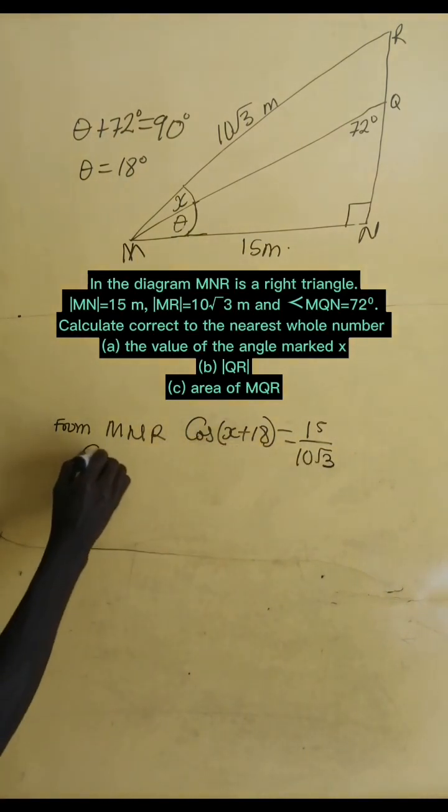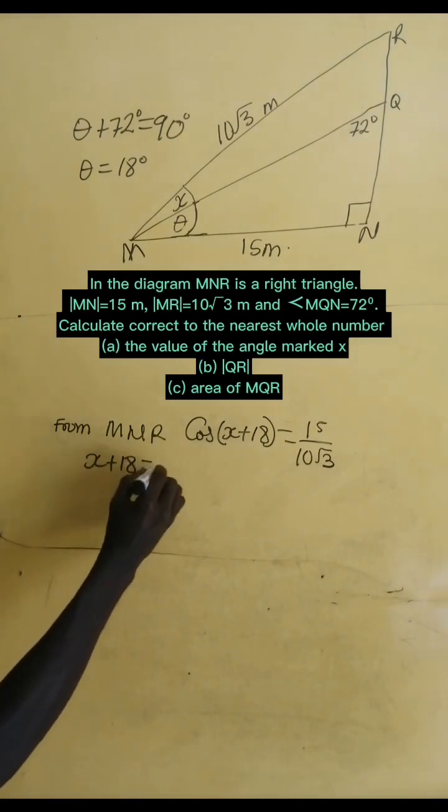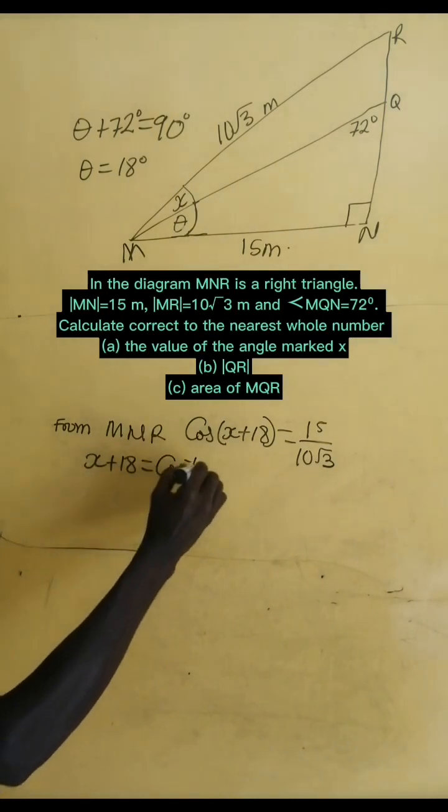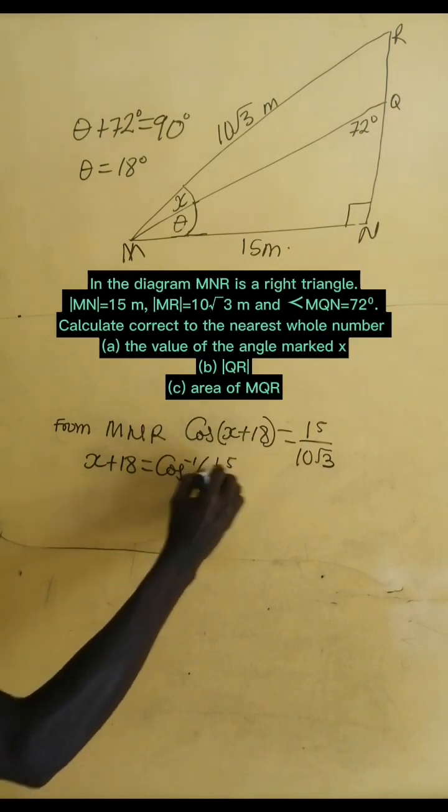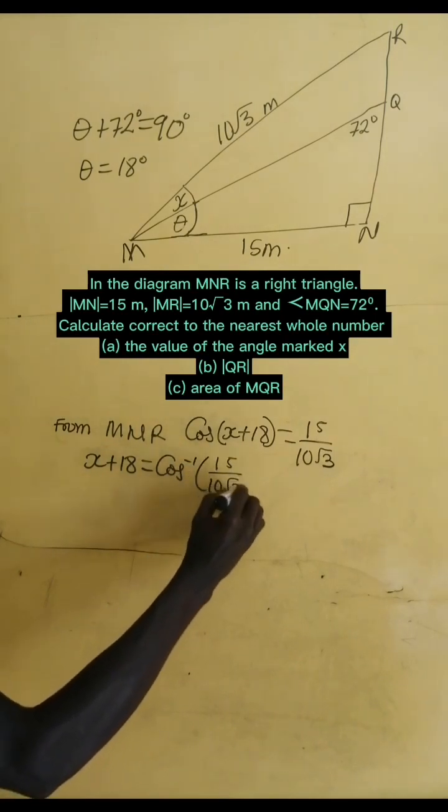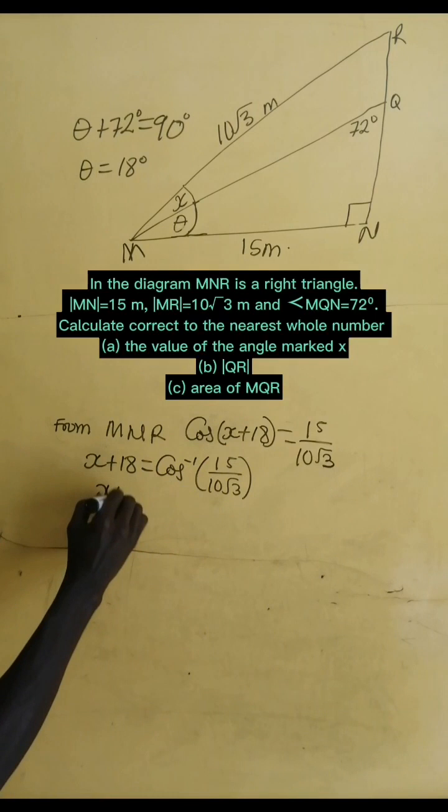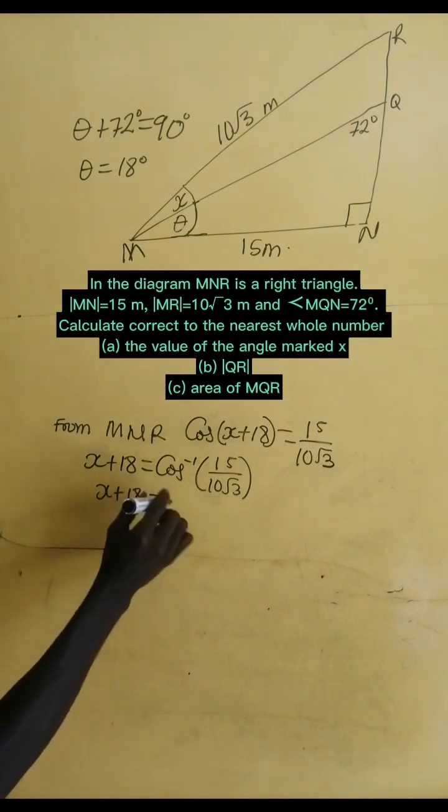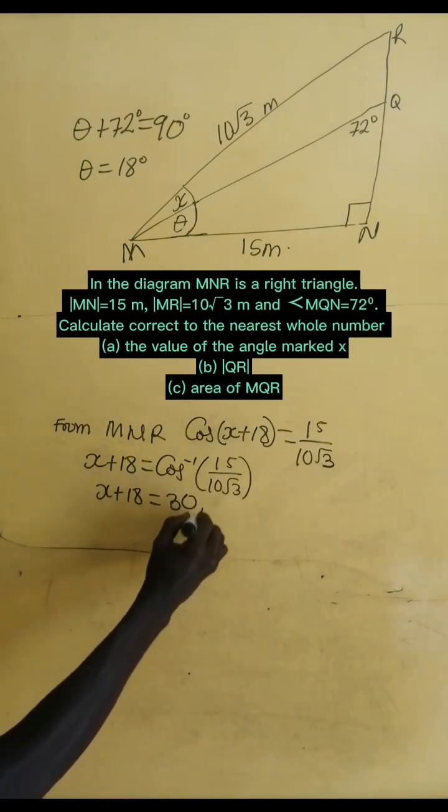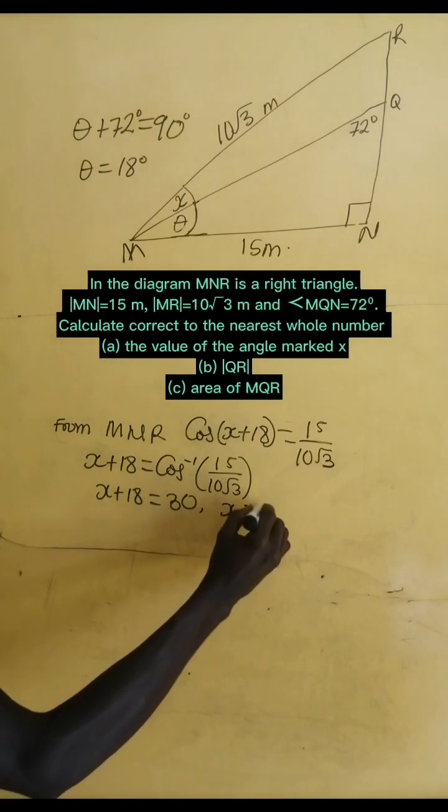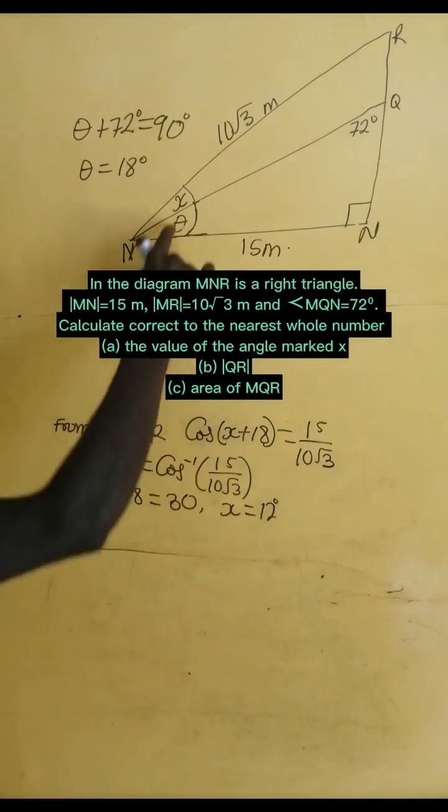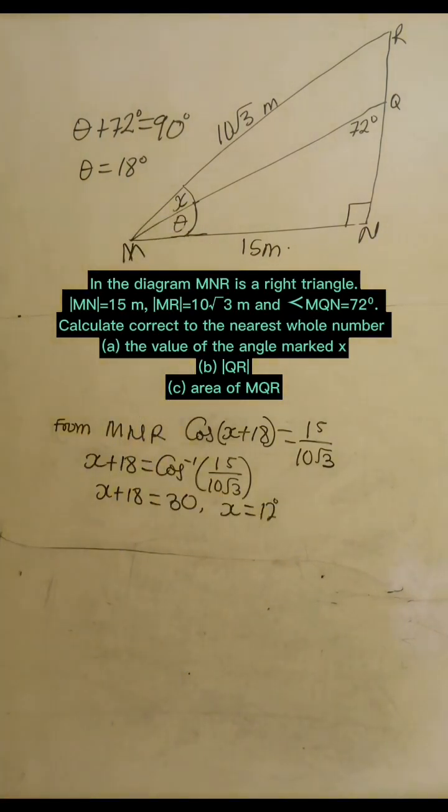Now, we take X plus 18 equals cosine inverse of 15 divided by 10 root 3. And this one, just use calculator to find that. So, we have X plus 18 equals 30, which gives X equals 12 degrees. That is the angle there.